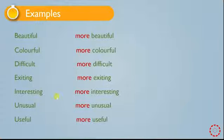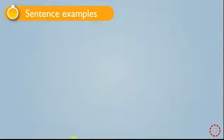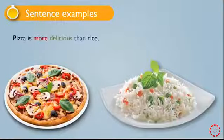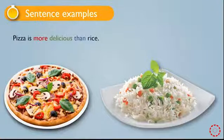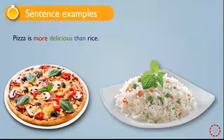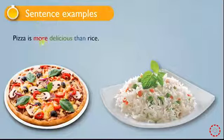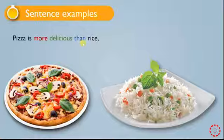These adjectives are called long adjectives. We add more before them to make them comparative adjectives. Look at these examples in sentences. Pizza is more delicious than rice. We have the word delicious — we add more before it to make it a comparative adjective, and we have the word than after the adjective.